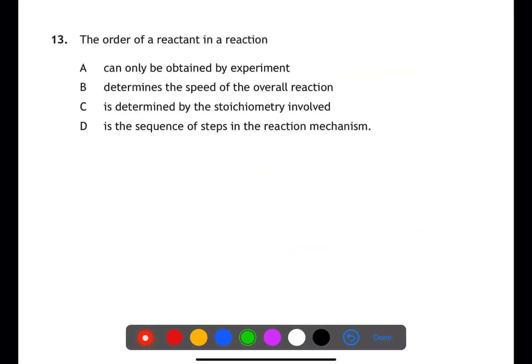Question 13 is about kinetics. The order of a reactant can only be obtained by experiment. Knowing the order of one reactant will give you some information, but not all of the information, about the speed of an overall reaction. You cannot determine it by the stoichiometry, and it is only part of the sequence of steps in a reaction mechanism.